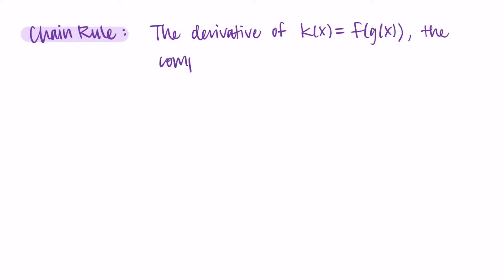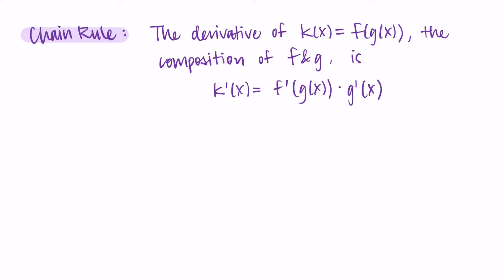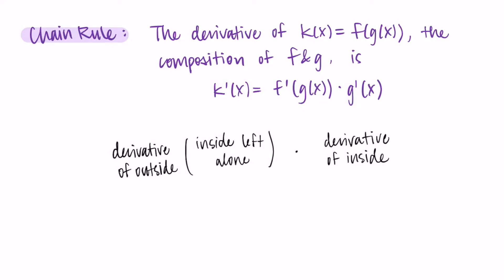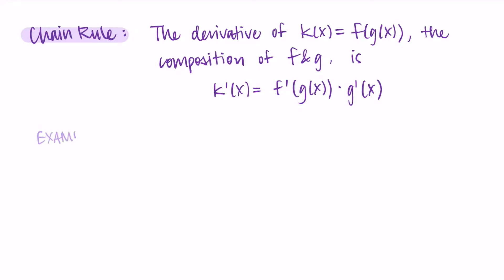So let's say we're taking the derivative of k of x, which is f of g of x — the composition of f and g. Then the derivative is k prime of x equals f prime of g of x times g prime of x. When we have f of g, I think of f as the outside function and g as the inside function. So f prime of g of x times g prime of x means: the derivative of the outside function with the inside function left alone as the input, then multiply by the derivative of the inside function. We're taking the derivative of both f and g, just combining them in this specific way.